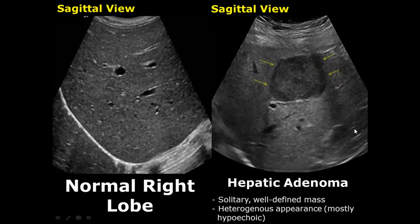A hepatic adenoma is a solitary, well-defined mass. It has variable appearance but mostly it is hypoechoic. We cannot confirm these lesions on ultrasound — we need to perform a CT scan.